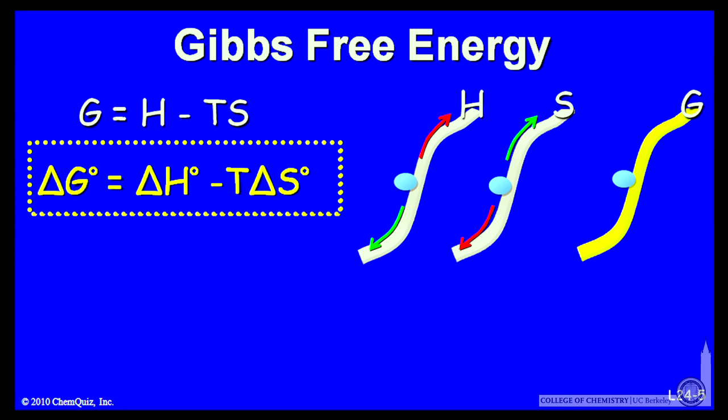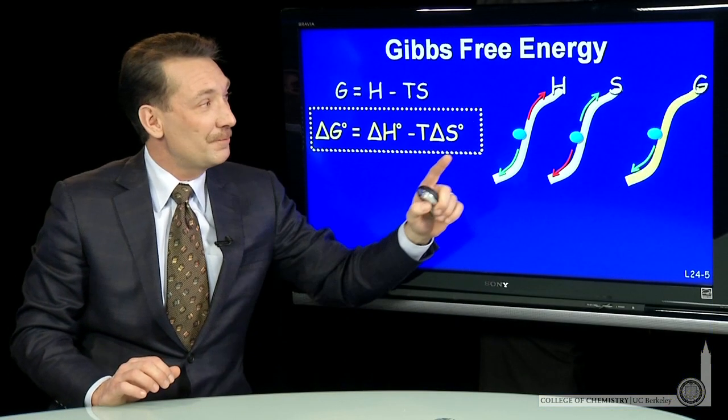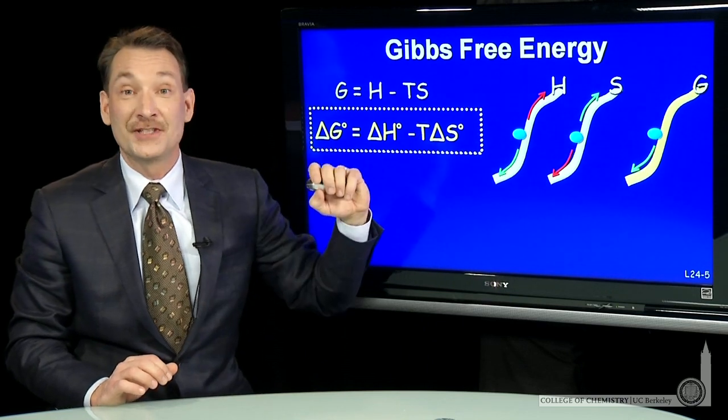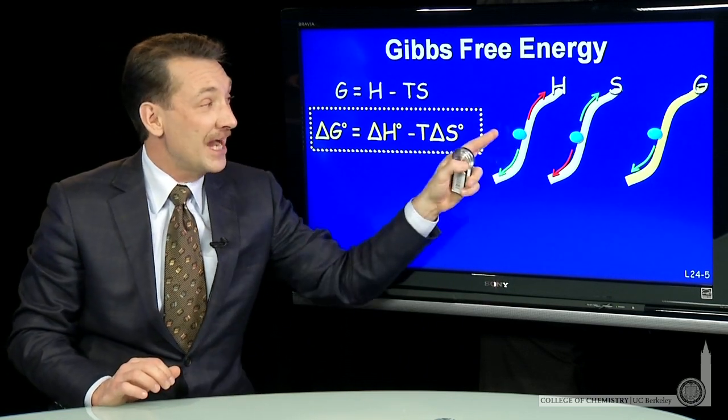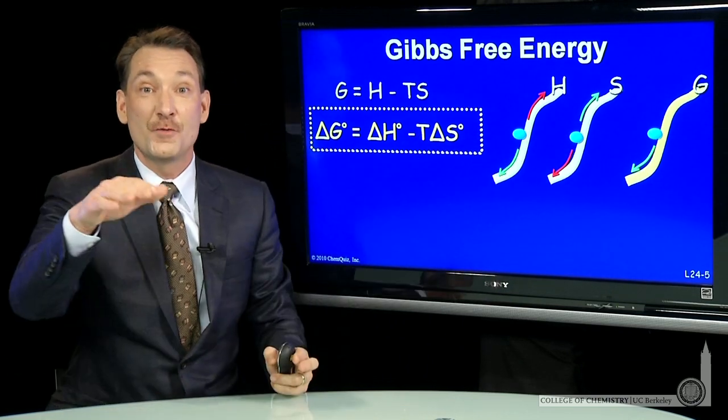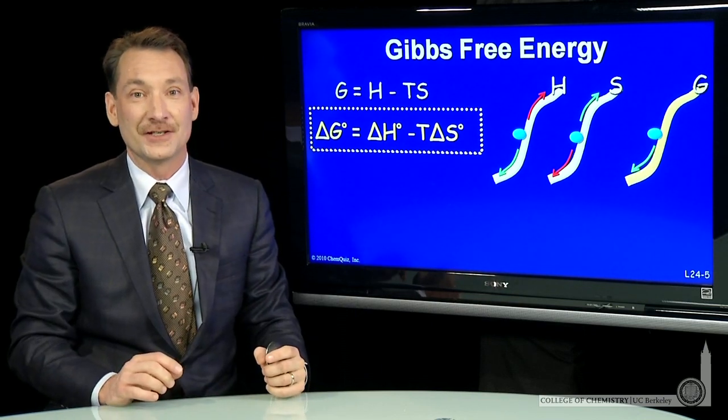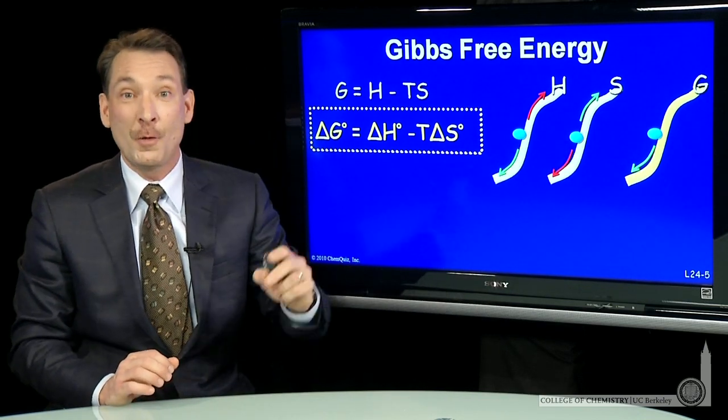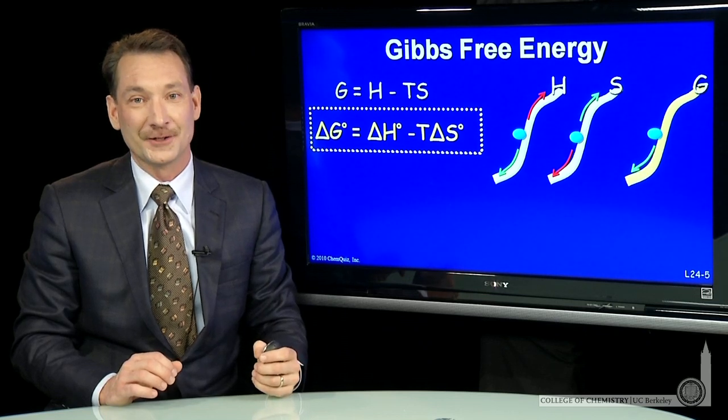But for a process to be favored, the free energy must always decrease. So the entropy and the enthalpy, in particular, aren't actual predictors of the direction of the chemical reaction. But the free energy is always a predictor of the direction of the chemical reaction.